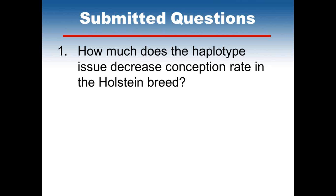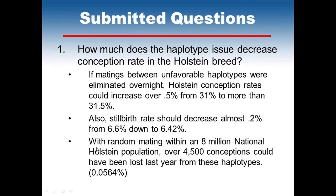Q: How much does the haplotype issue decrease conception rate in the Holstein breed? If matings between unfavorable haplotypes were eliminated overnight, we'd expect conception rate could increase over 0.5%, from 31% to more than 31.5%. We'd also expect stillbirth rate should decrease almost 0.2%, going from 6.6% down to a little over 6.4%. With random mating within the 8 million national Holstein population, we would have expected 4,500 conceptions could have been lost last year from these haplotypes.